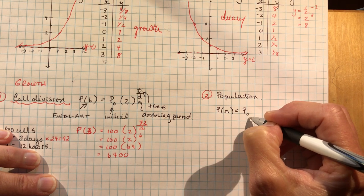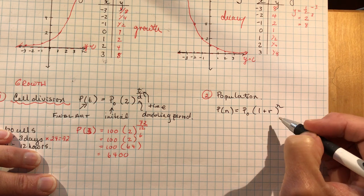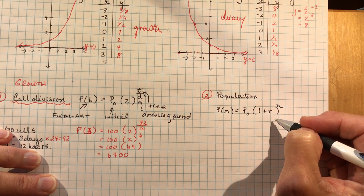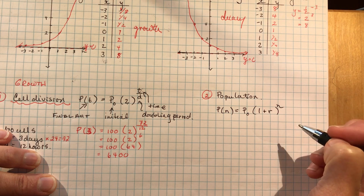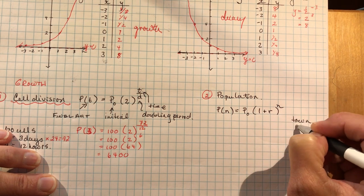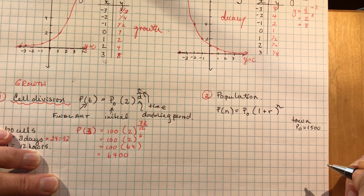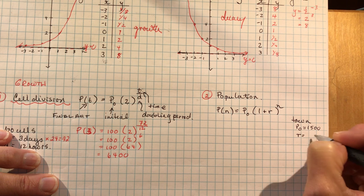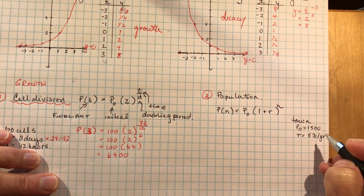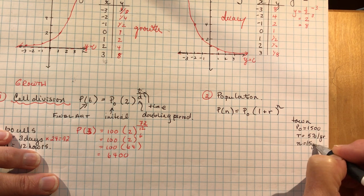And again, this little sub-zero means the initial population. And it's multiplied by one plus r to the power of n. And this time, it's not a doubling period. It's just the number of years that have gone by. So generally you would say something like the population is growing at, let's say, 5% per year. So you can make up your own word problem. Let's say we're in a small town. And the small town has an initial population of 1500 people. But it's growing. It has a growth rate. The rate of growth is 5% per year. And I want to know, what will the population be in 15 years?